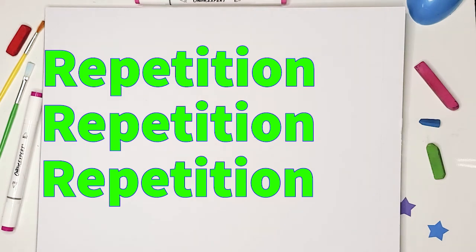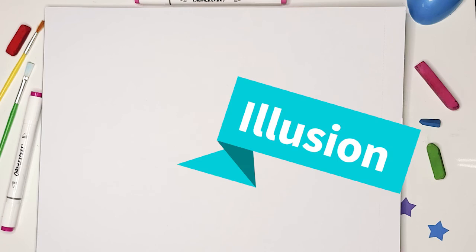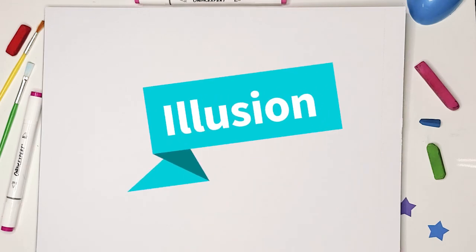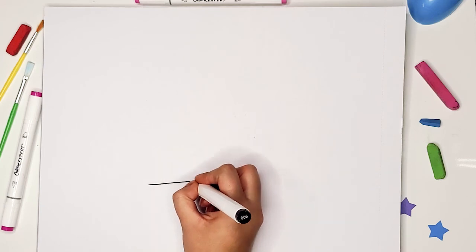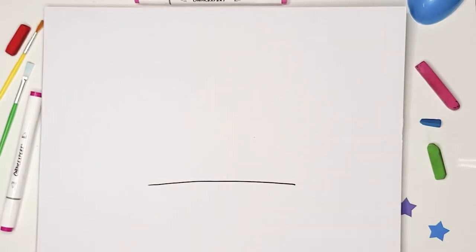Throughout the video, we will see vocabulary art words such as repetition, shapes, space, illusion, and other words. Now that we have all of our materials, ready, set, draw your marks. The first shape that we are going to draw is a big rectangle.